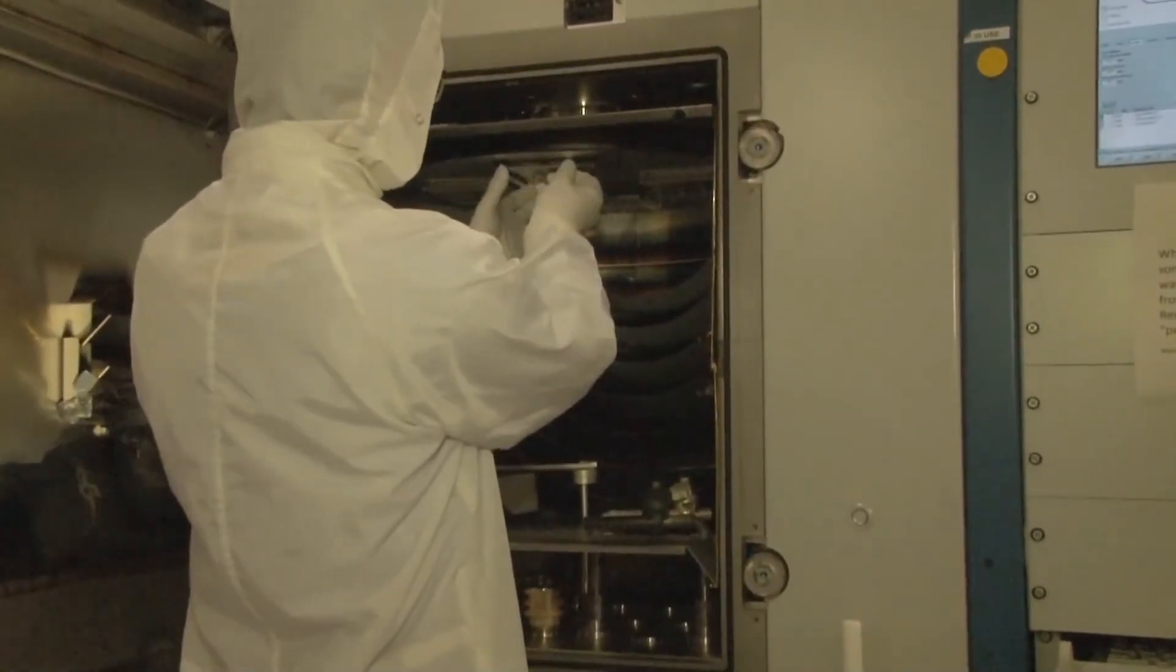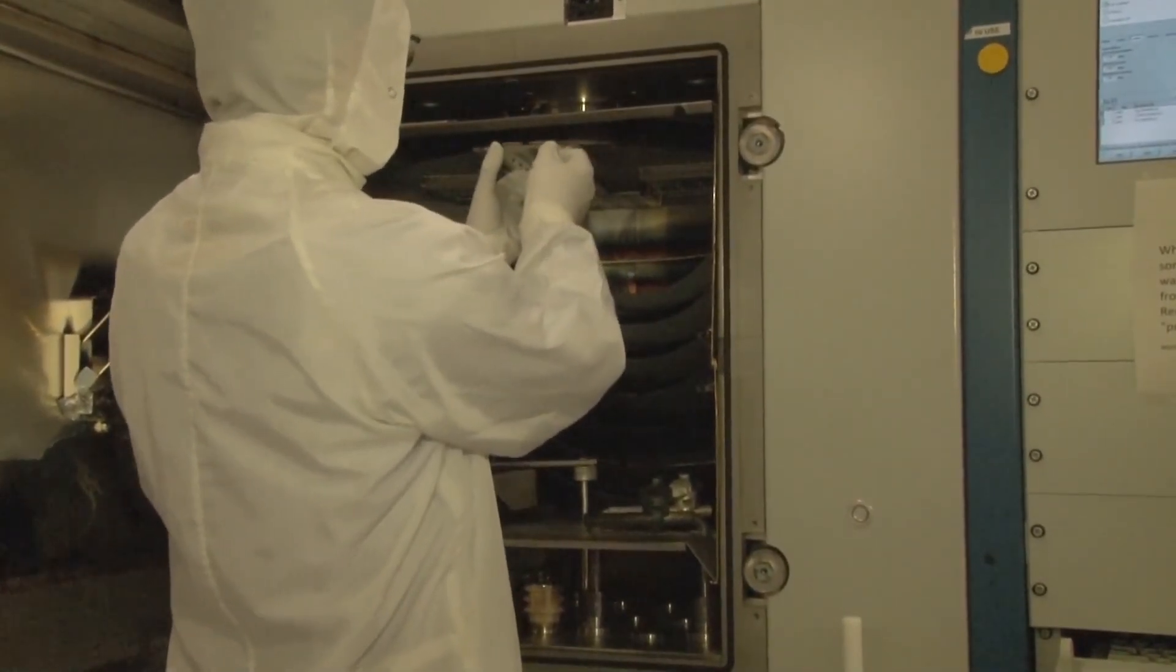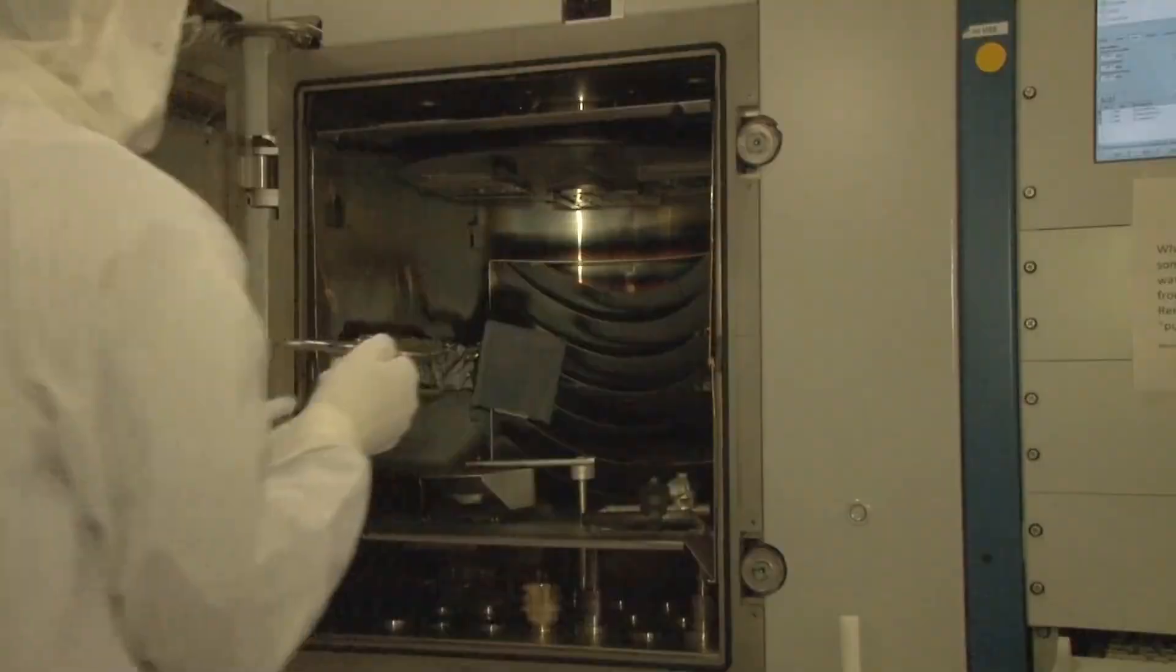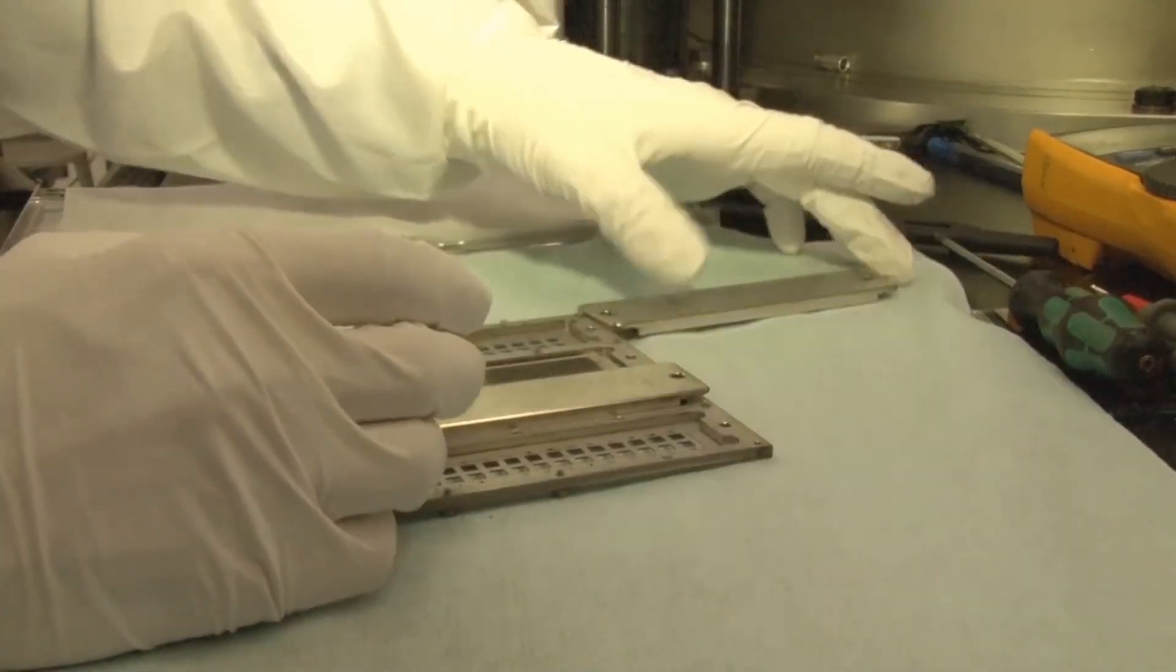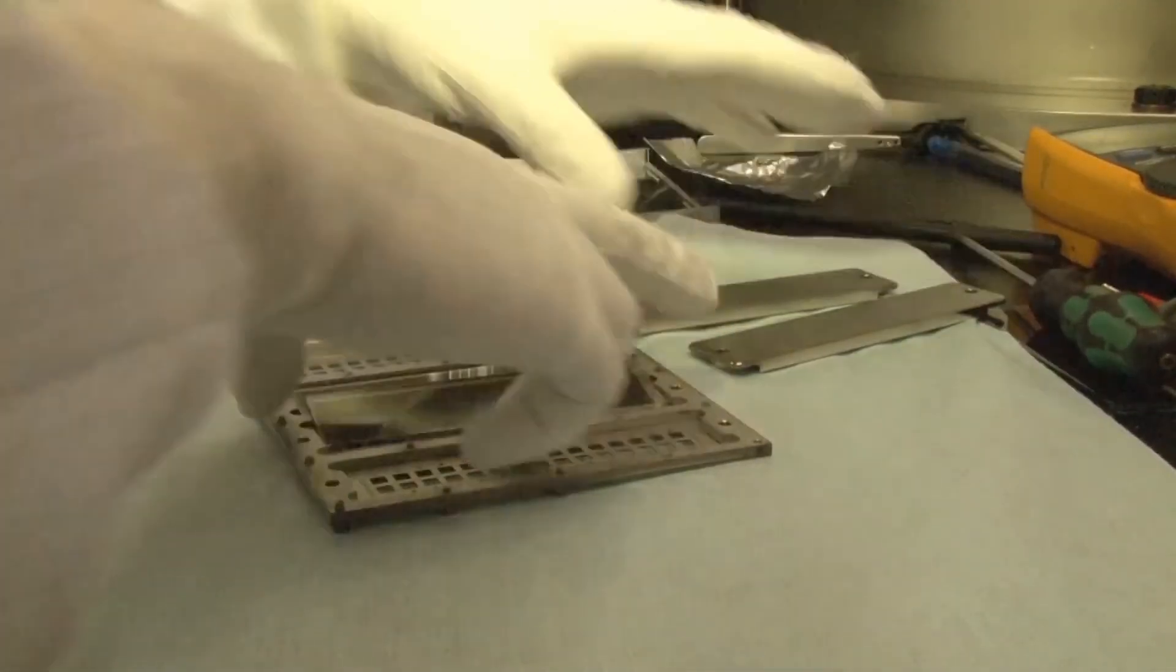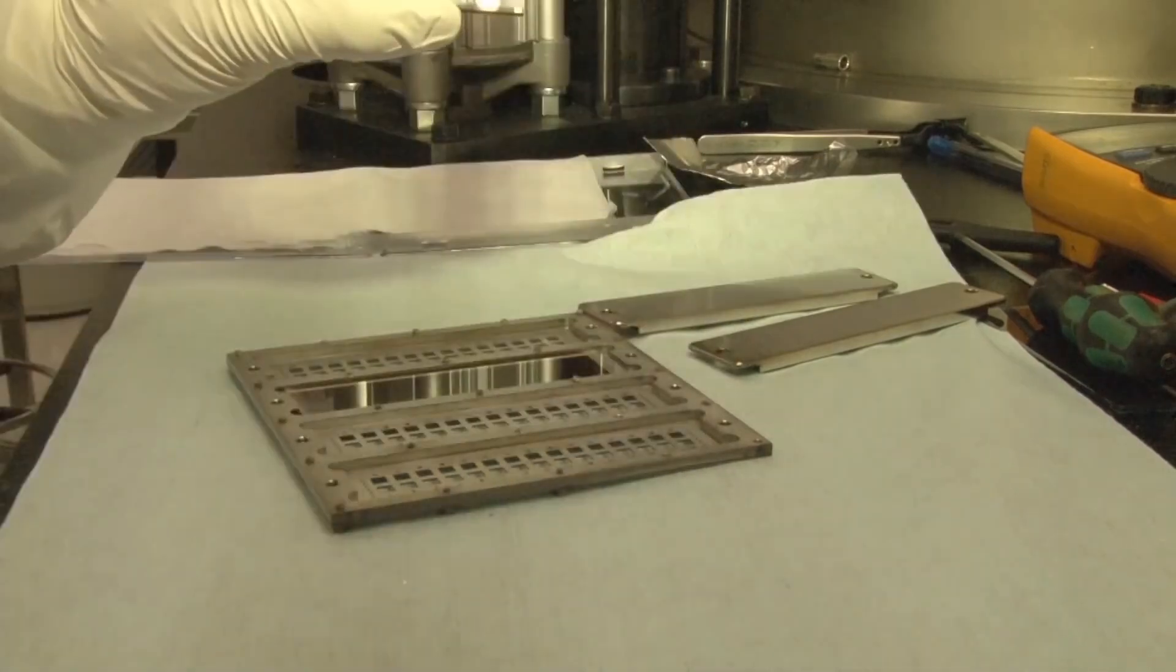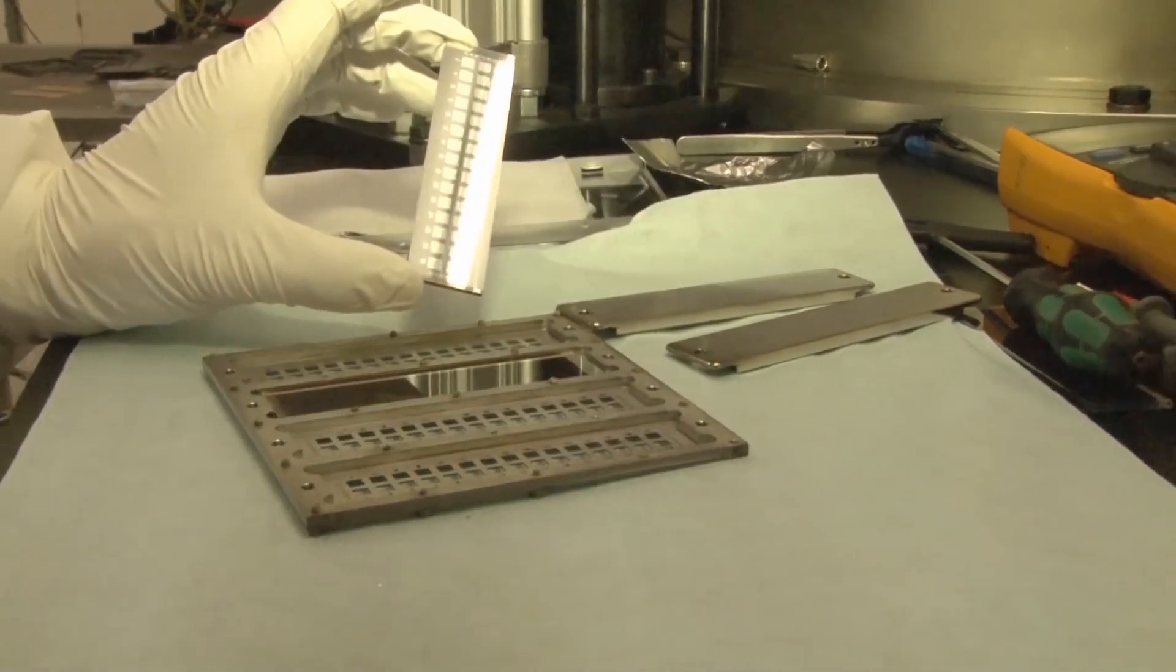After taking the solar cell out of the e-beam evaporation setup, we can see the final silicon solar cell on lab scale. Every metal contact represents a solar cell.